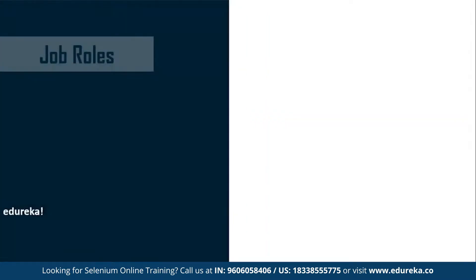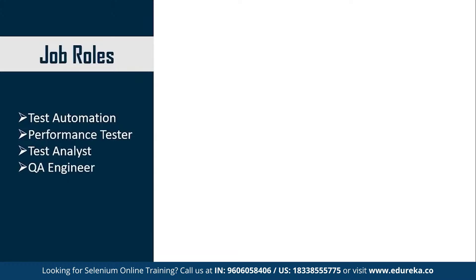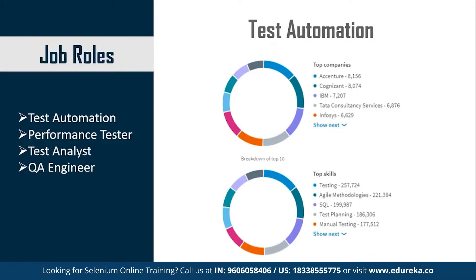Let's have a look at the job roles for a test automation engineer. Some of the most common job profiles include test automation, performance tester, test analyst, and QA engineer. According to statistics provided by LinkedIn, some of the top companies in test automation are Accenture, Cognizant, IBM, TCS, and Infosys. The top skills required to become a test automation engineer include knowledge of testing, agile methodologies, SQL, test planning, and manual testing.